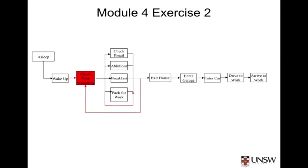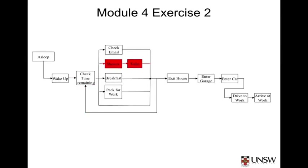One benefit of using the FFPD is you can see the linkages between different activities to determine requirements. For example, ablutions are likely to consist of a number of activities that drive requirements for a bathroom, a shower, and perhaps a separate toilet facility in the domestic dwelling. For this iteration of the FFPD, we've assumed that ablutions consist of a shower and a toilet, and you can see how you can take a single function and expand it into sub-functions to better understand how that process continues.